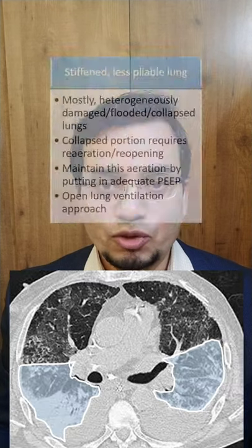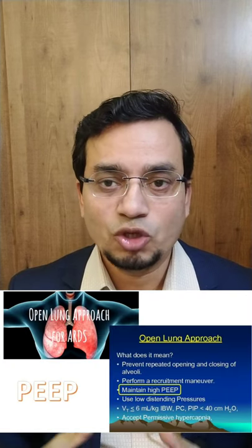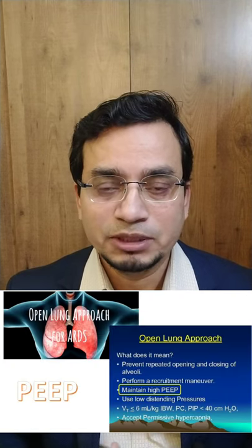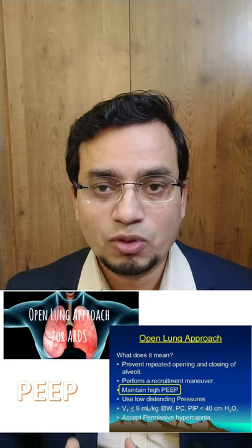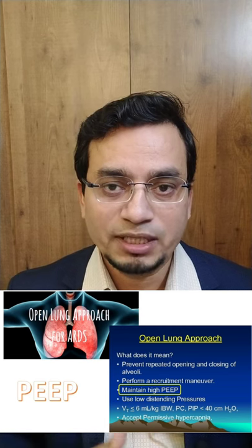Then there is the dorsal portion of the ARDS lung, which is mostly heterogeneous, inflamed, flooded, and collapsed. This area does not receive any significant ventilation and hence contributes to shunt fraction. If we could open this area of lung using optimal PEEP, the approach is called open lung ventilation.